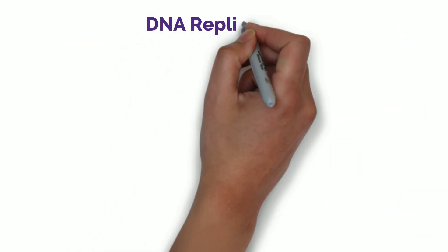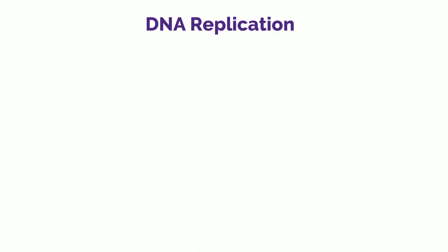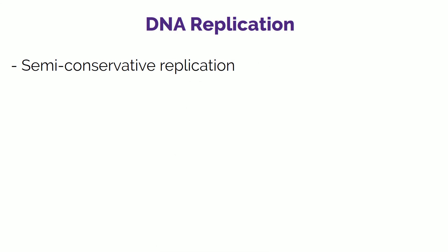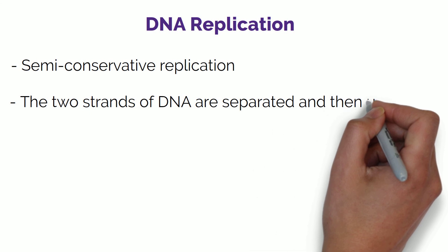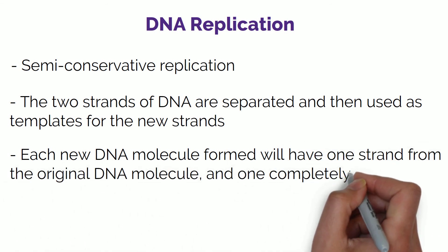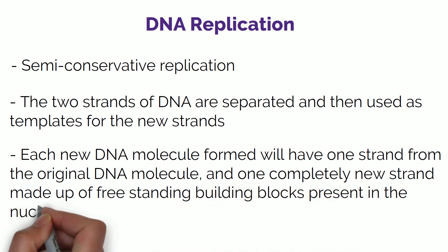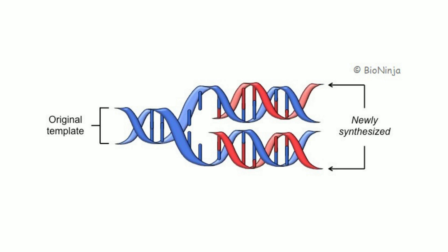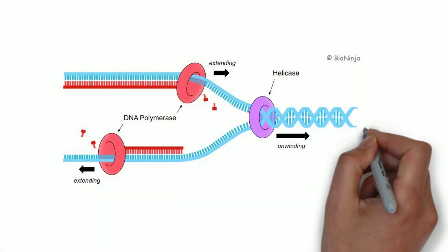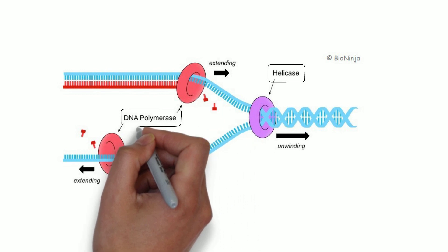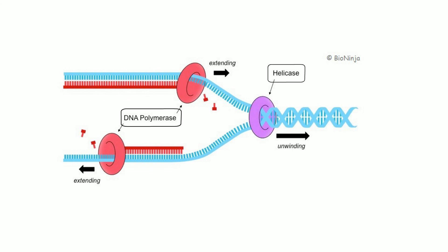Our final subject for today is the replication of DNA. When you are forming new cells, the DNA needs to replicate so the new cell has DNA as well. This replication process is semi-conservative, because when replication occurs the two strands of DNA are separated and then used as templates for the new strands. So each new DNA molecule will have one strand from the original DNA molecule and one completely new strand made up of free-standing building blocks present in the nucleus. Two very important enzymes are involved: helicase, which is responsible for separating the two DNA strands, and DNA polymerase, which forms the new strands by binding the free-standing building blocks to the template strand.